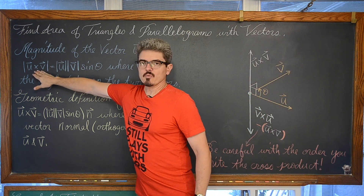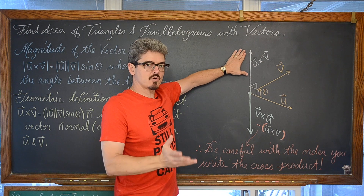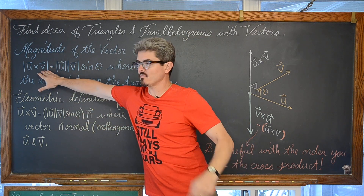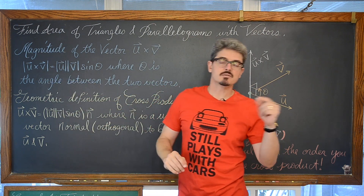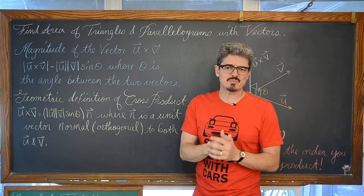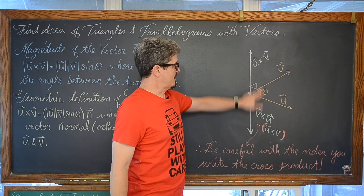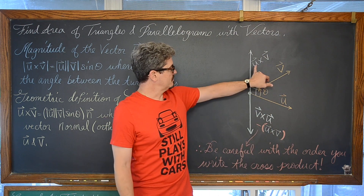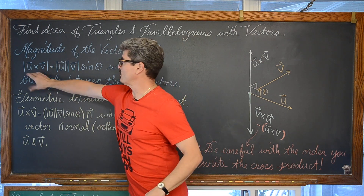Now, when you talk about this magnitude formula, if you are looking at the cross product vector you get from the cross product process, that order makes a difference — they are going to be opposite vectors, but they will have the same magnitude. The magnitude of a vector in component form is the square root of a squared plus b squared plus c squared, or u₁ squared plus u₂ squared plus u₃ squared if you are in 3-space. The squaring process is going to take care of any positive or negative difference between these two vectors on those components.